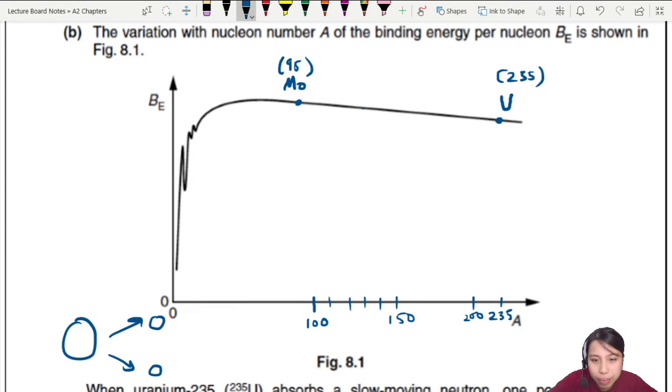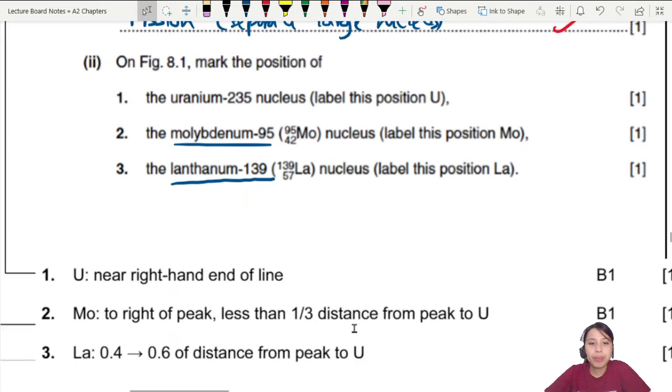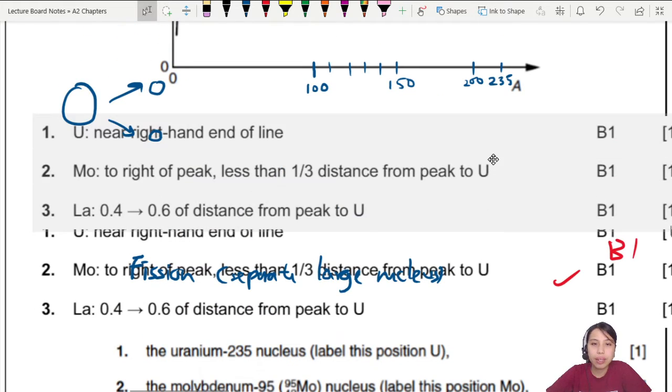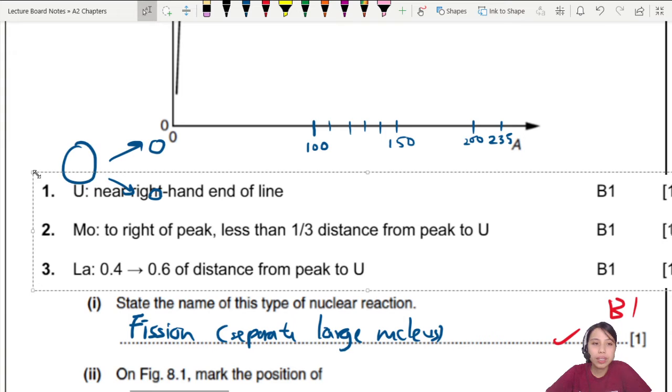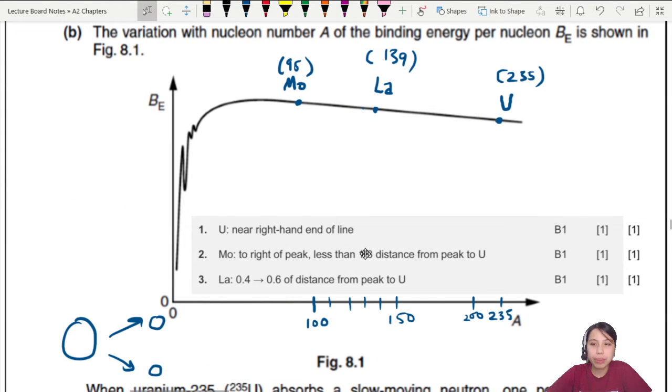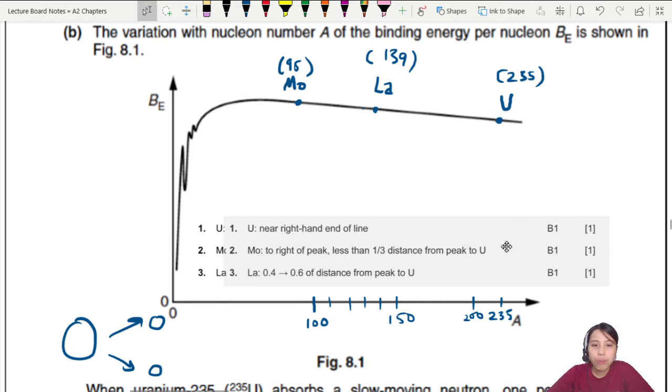...I've got to do some skills. This is 150, 110, 120, 130, 140. So 139 will be somewhere here - La at 139. Let's see whether this is correct or not. The mark scheme is quite strict, you'll see later.